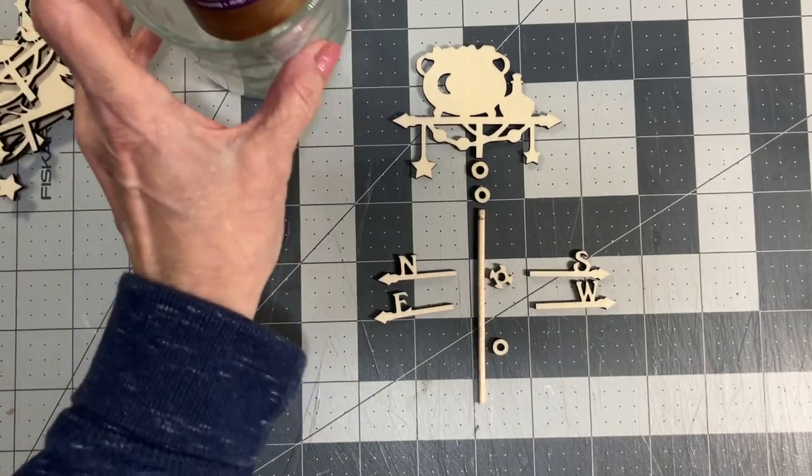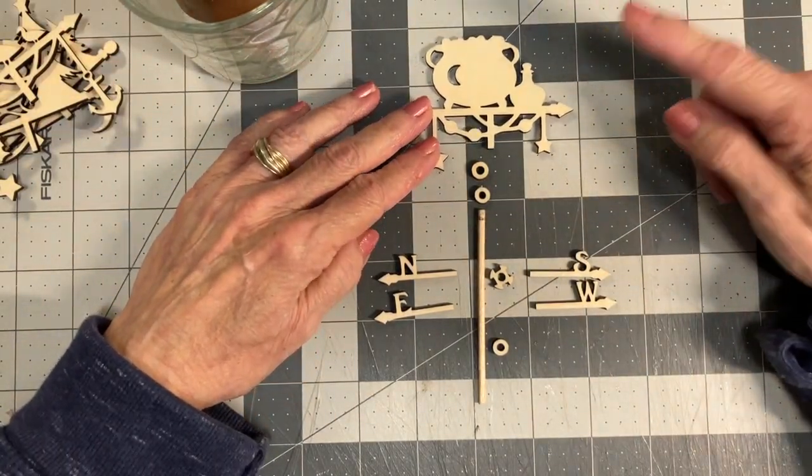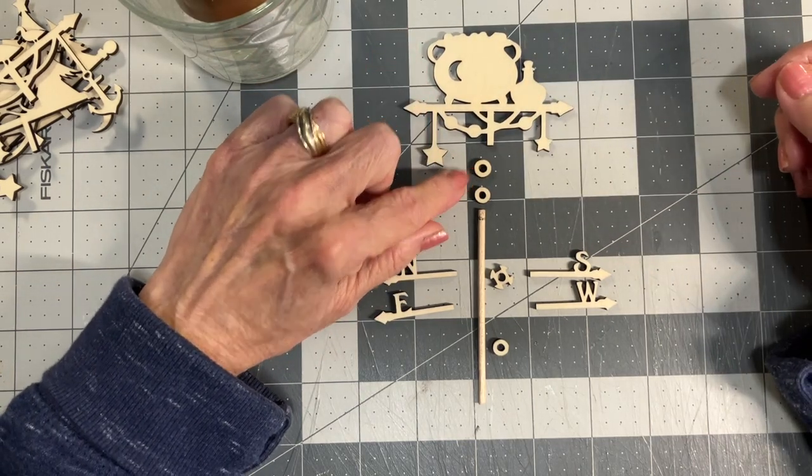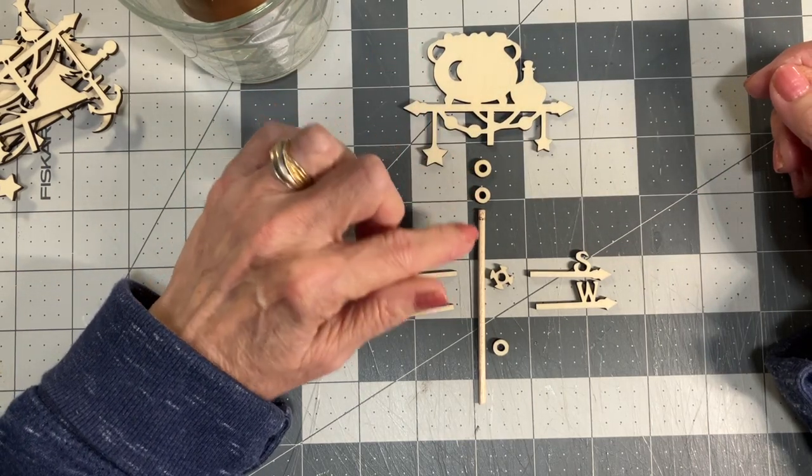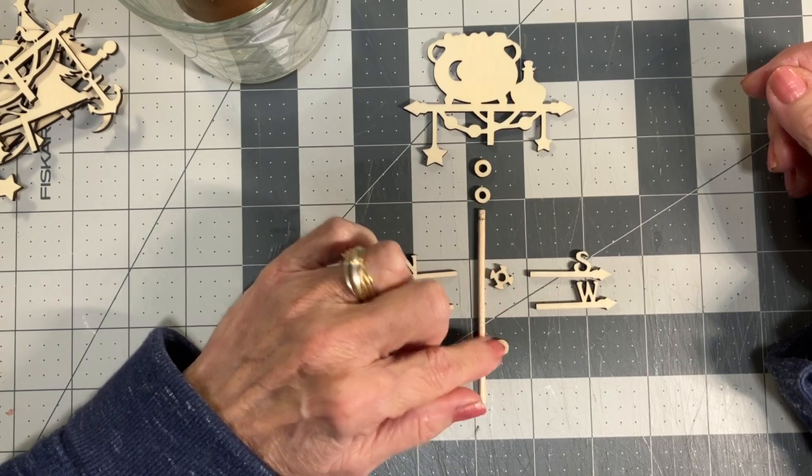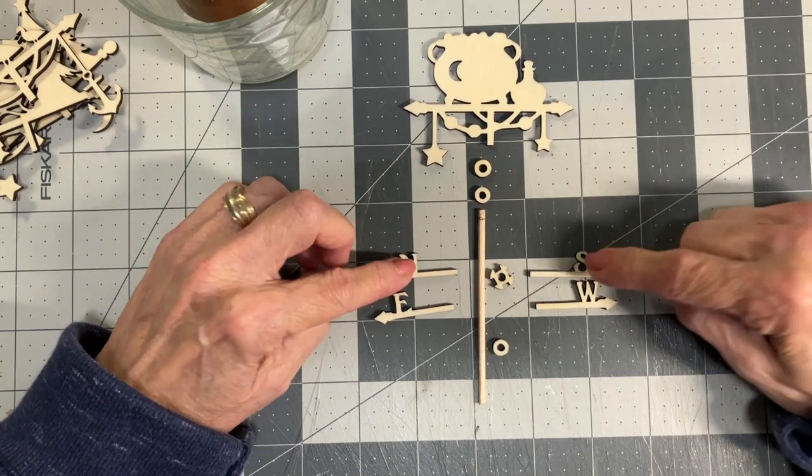So here is how you construct the weather vanes. They're all the same. You have a top, then two circles, then a dowel rod, then a cogwheel, another circle, and your north, south, east, and west.